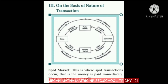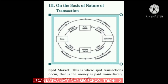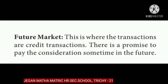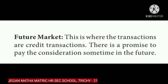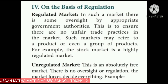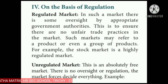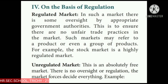On the basis of nature of transaction, there is the spot market and the future market. In the spot market, the transaction occurs immediately — money is paid on the spot and there is no system of credit. In the future market, there is a credit transaction and a promise to pay the consideration sometime in the future. On the basis of regulation, there is the regulated market and the unregulated market. In the regulated market, there is oversight by an appropriate government authority to ensure there are no unfair trade practices. For example, the stock market is a highly regulated market. The unregulated market is an absolutely free market with no oversight or regulation, and market forces decide everything.